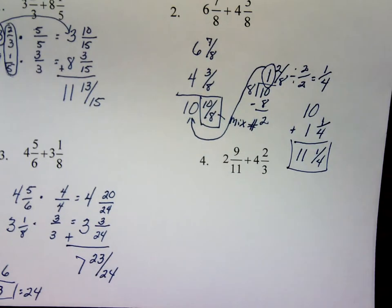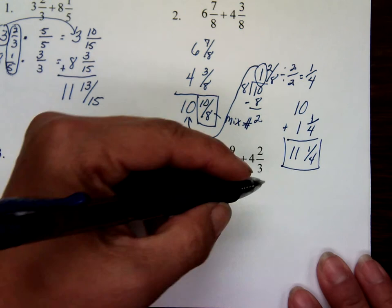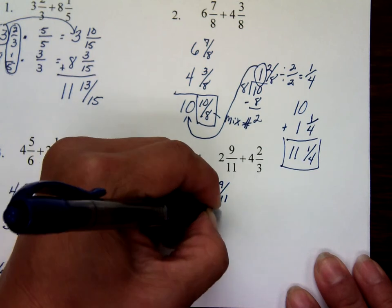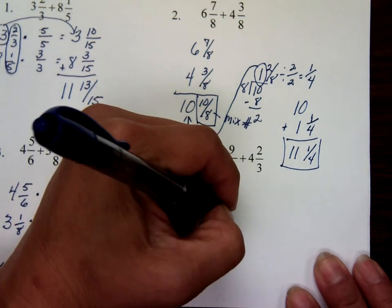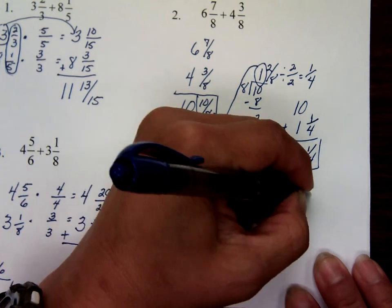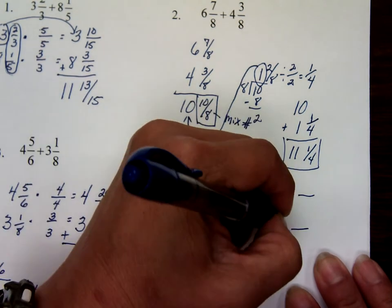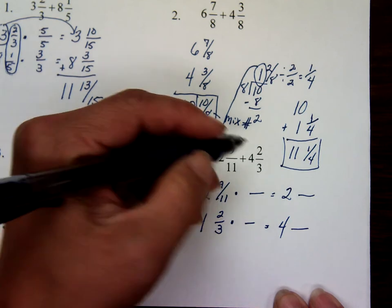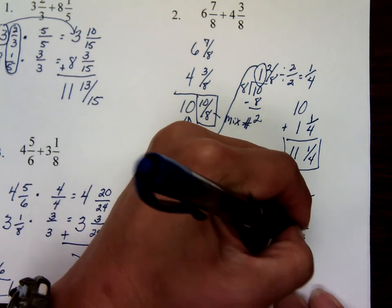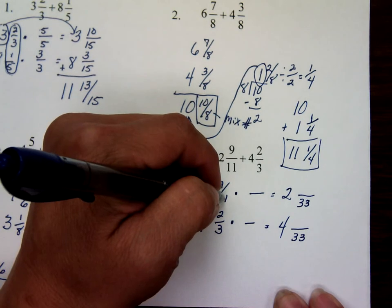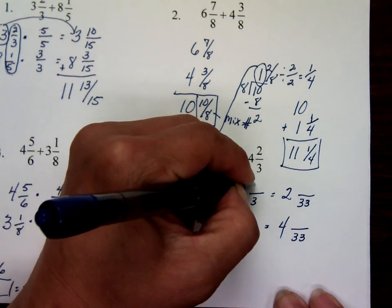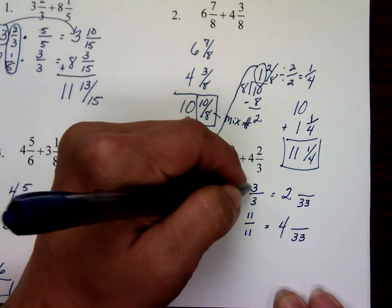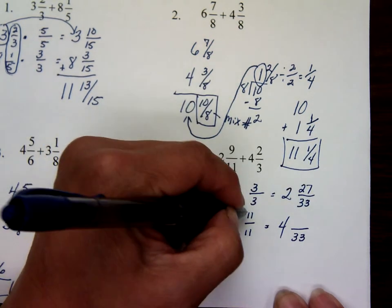Number four: line them up vertically — two and nine-elevenths plus four and two-thirds. Do your setup and don't forget your whole numbers. Three is prime and three can't go into eleven, so three times eleven is thirty-three. Put thirty-three as your denominator. Eleven times what equals thirty-three? Which is three. And three times what equals thirty-three? Which is eleven. Multiply across: nine times three is twenty-seven, and two times eleven is twenty-two.